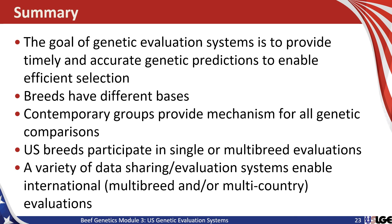In summary, the goal of genetic evaluation systems is to provide timely and accurate genetic predictions to enable efficient selection. Evaluations are the result of a combination of phenotypic performance records and genomic information to provide useful genetic predictions. Breeds have a variety of different strategies for setting their base for comparison within their own genetic evaluation. Contemporary groups provide a mechanism for all genetic comparisons, with a number of strategies based on trait groupings for those formations. A number of U.S. breeds participate in single and multi-breed evaluations, and there are a variety of data sharing and evaluation systems that enable international, multi-breed, and multi-country genetic evaluations so that EPDs for those populations are comparable both in the United States and around the world.